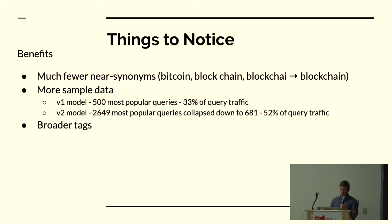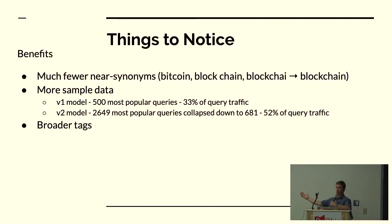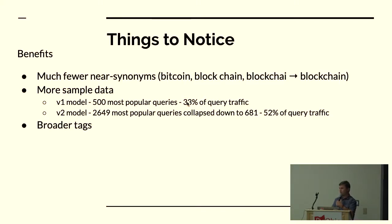Wrapping up — there are a few things to notice. We've done a pretty good job with fewer synonyms: blockchain, bitcoin, and misspellings all get mapped to one word, producing higher-quality tags. We've got a lot more data — 2,000 queries collapse to 500 terms, and events clicked from the 2,000 most popular terms account for 52% of traffic compared to about 33% before. And since we're squishing out common redundant terms, we have a much broader vocabulary — no longer wasting three slots on variants of 'Memorial Day'.